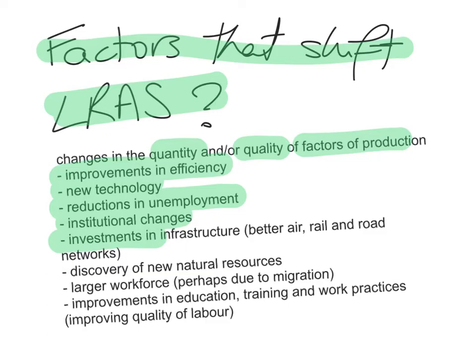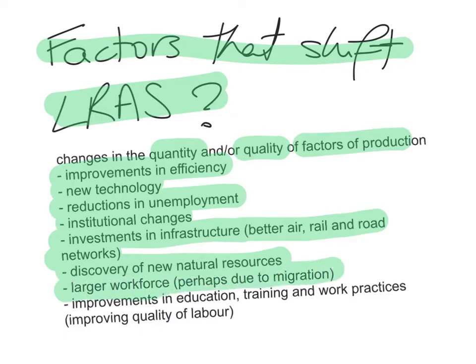Investments in infrastructure — building better air, road and rail networks or better communication networks — also contribute. The discovery of new natural resources will increase the quantity of factors of production. Having a larger workforce, perhaps due to migration, increases the labour force and, in the long run, increases Long Run Aggregate Supply. Improvements in education, training, and work practices improve the quality of labour. All these things lead to changes in the quantity and/or quality of the factors of production, increasing the productive potential of the economy.